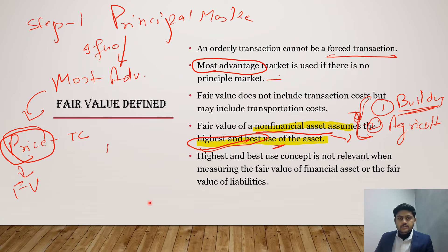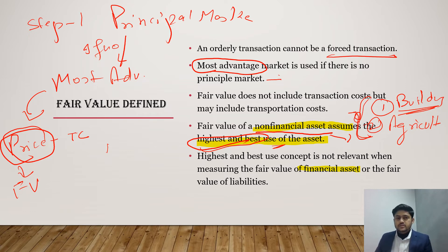The highest and best use concept is not relevant when measuring the fair value of financial assets — in financial assets there are multiple other factors, so we do not use highest and best use. Similarly, for the fair value of a liability, we also do not use the highest and best use concept.